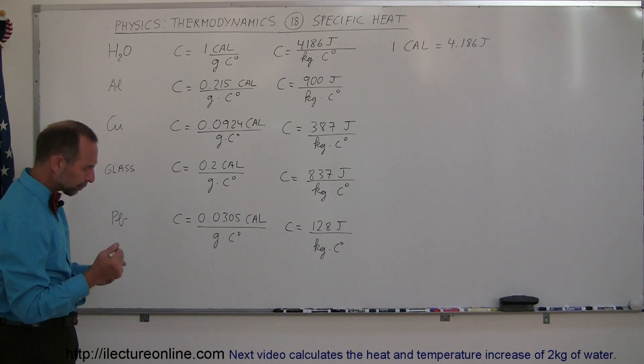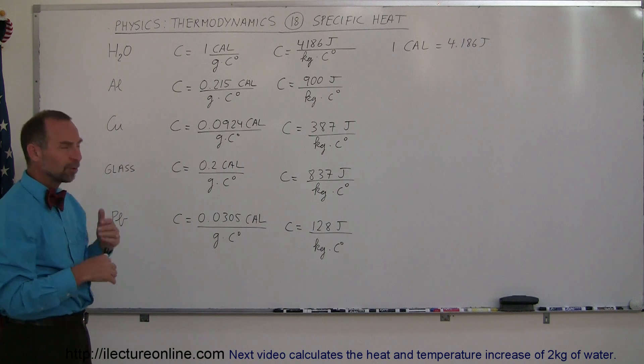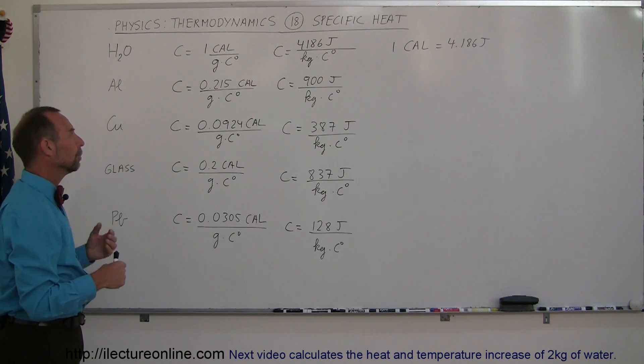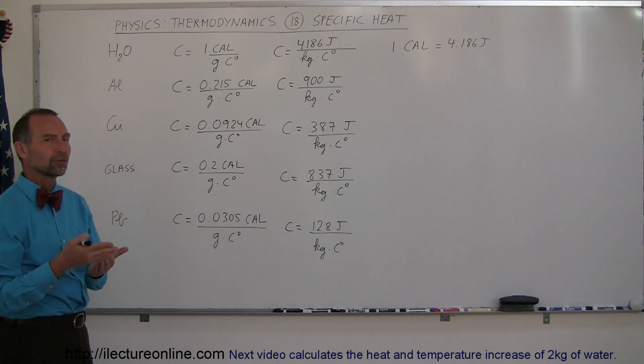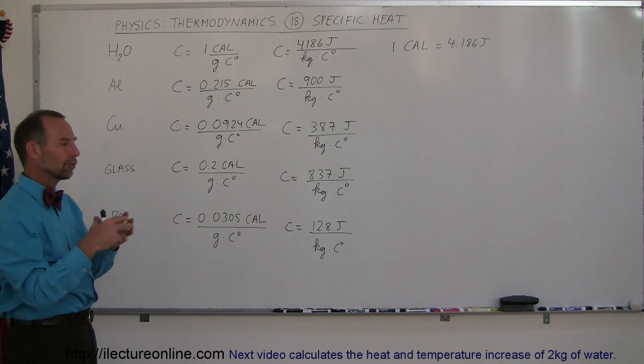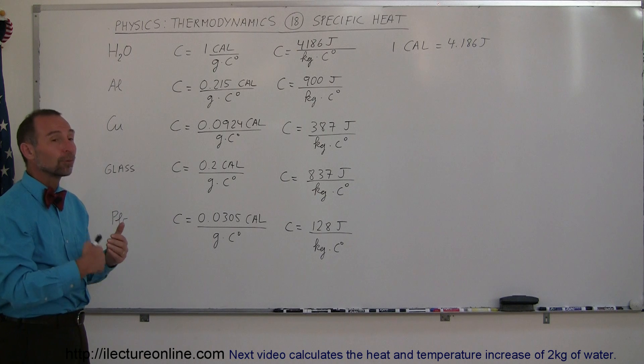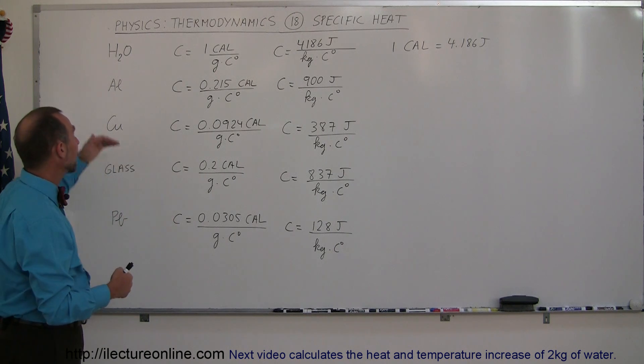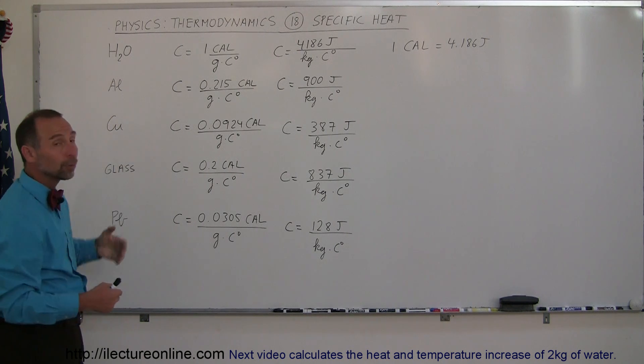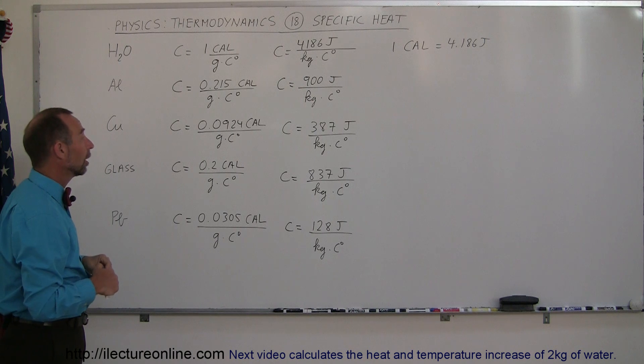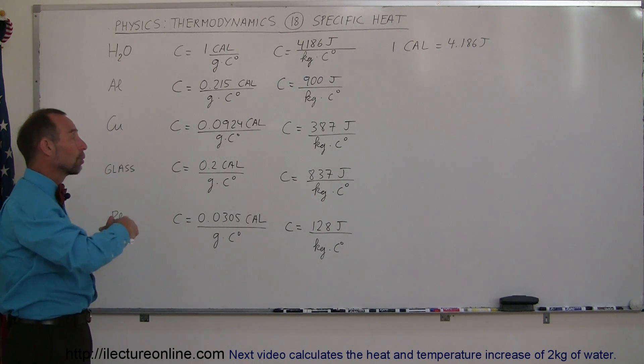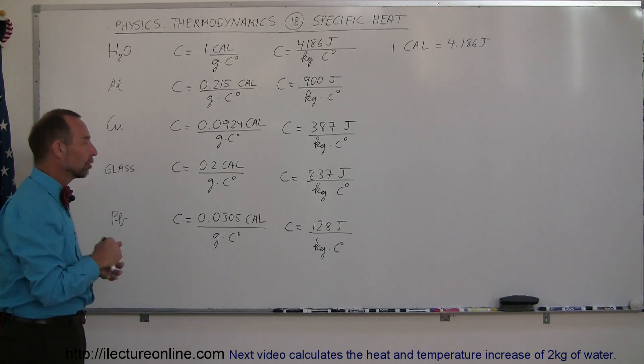Knowing these specific heats means you can use materials for different purposes. If you're making a container that needs to absorb a lot of heat, making it out of aluminum instead of copper would be a big advantage because otherwise the temperature would go up too quickly when adding heat.